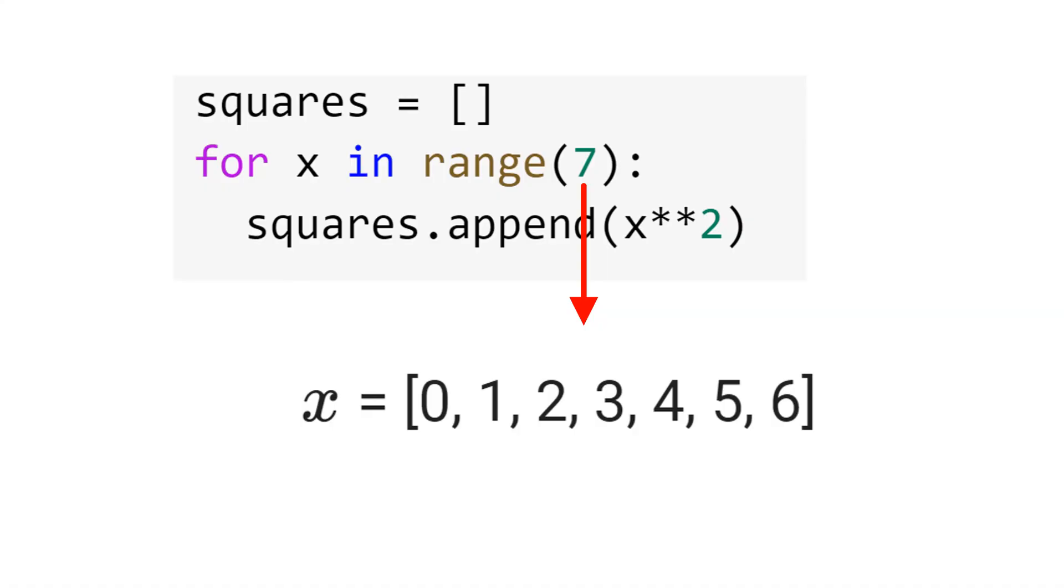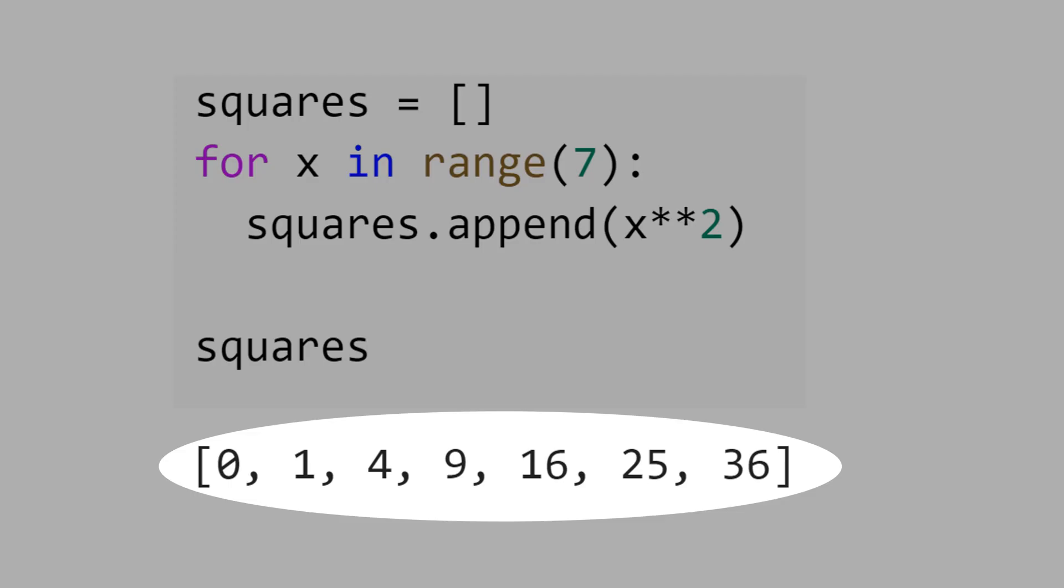Note that range 7 generates the numbers 0, 1, 2, 3, 4, 5, 6. And here is the result.